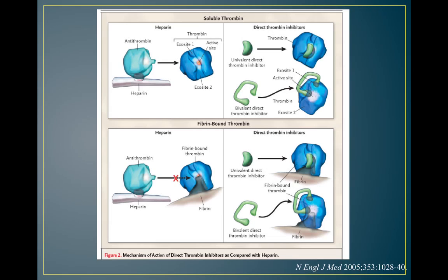The heparin-antithrombin complex cannot bind fibrin-bound thrombin — that's a major limitation of heparin. However, direct thrombin inhibitors can bind both fibrin-bound thrombin and free circulating thrombin. This is a key advantage of DTIs: heparin can only act on circulating thrombin via antithrombin, whereas direct thrombin inhibitors bind directly to thrombin whether it's free or already attached to fibrin. Since thrombin in a blood clot is already attached to fibrin, this makes DTIs particularly useful.